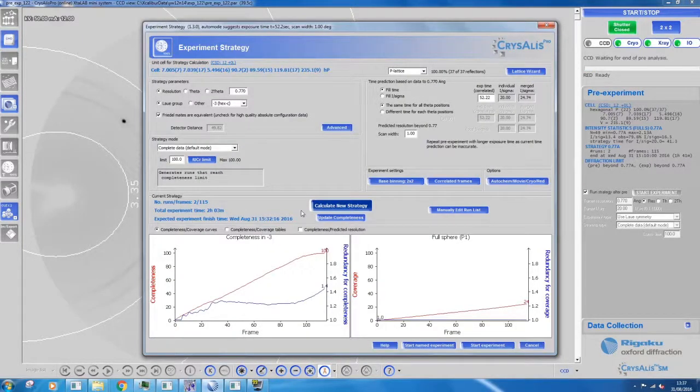After the pre-experiment, a data collection strategy box will appear. Before clicking the start experiment button, there are a few things to check beforehand. If you know what unit cell you're looking for, check to see if it's correct. Check that the orders of magnitude of the unit cell is sensible for the molecules involved. Check the percentage of reflections that match the given unit cell.